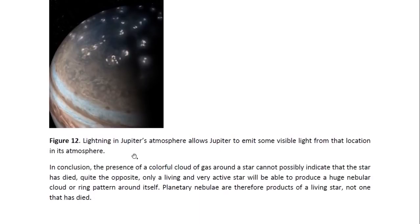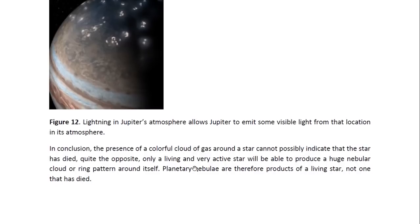And here we see lightning in Jupiter's atmosphere. This lightning obviously allows Jupiter to emit some visible light from that location in its atmosphere. And this is also the way that the sun emits light, except in the sun there is much much more of it, so the whole atmosphere of the sun seems to light up with light emission.